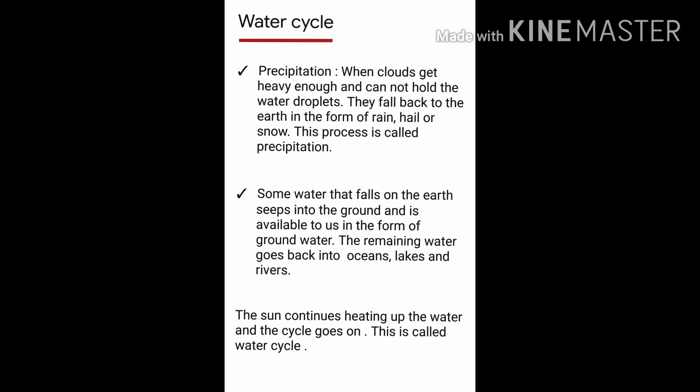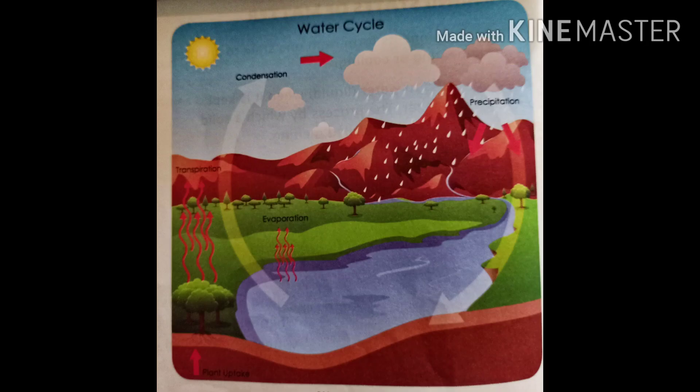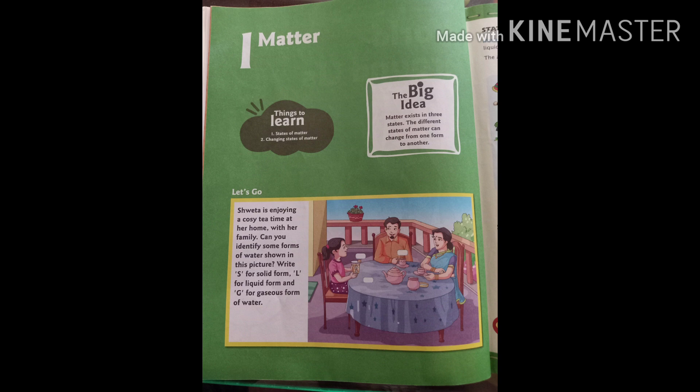The remaining water goes back into oceans, lakes, and rivers. This process is called collection. The sun continues heating up the water and the cycle goes on. This is called the water cycle.